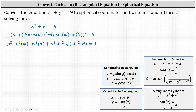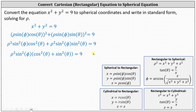Now comparing these two products on the left, the greatest common factor is rho squared sine squared phi. Let's go ahead and factor. This gives us rho squared sine squared phi times the quantity cosine squared theta plus sine squared theta equals nine. And again, using our trig identities, we know cosine squared theta plus sine squared theta equals one.